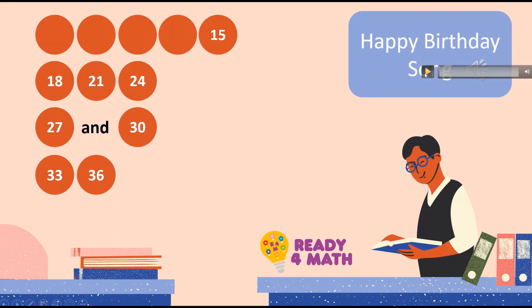Ready? 3, 6, 9, 12, 15, 18, 21, 24, 27, and 30, 33, 36. Let's remove another one. Ready? Sing: 3, 6, 9, 12, 15, 18, 21, 24, 27, and 30, 33, 36. Ready? 3, 6, 9, 12, 15, 18, 21, 24, 27, and 30, 33, 36.